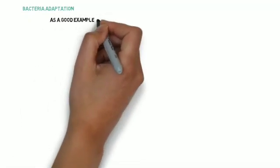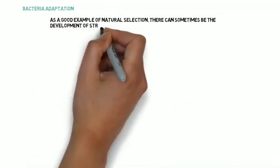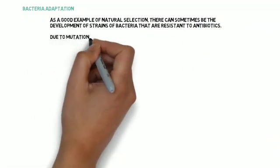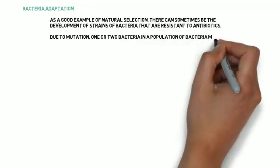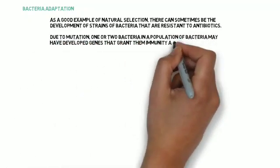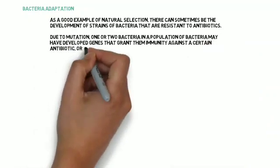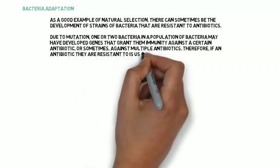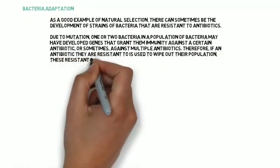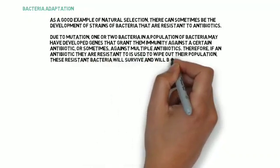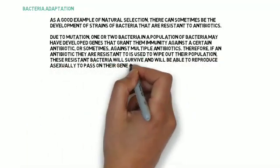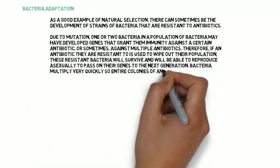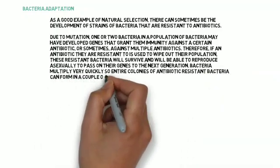As a good example of natural selection, there can sometimes be the development of strains of bacteria that are resistant to antibiotics. Due to mutation, one or two bacteria in a population may have developed genes that grant them immunity against certain antibiotics, or sometimes against multiple antibiotics. Therefore, if an antibiotic they are resistant to is used to wipe out their population, these resistant bacteria will survive and will be able to reproduce asexually. Bacteria multiply very quickly, so entire colonies of antibiotic-resistant bacteria can form in a couple of hours.